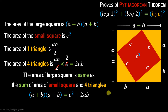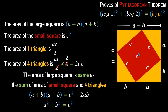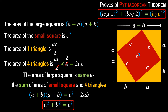We now set up the equation: (a + b)(a + b) = c squared + 2ab. Expanding the left side using the algebraic identity gives a squared + b squared + 2ab = c squared + 2ab. Since 2ab appears on both sides of the equation, we can cancel it out, leaving us with a squared + b squared = c squared.